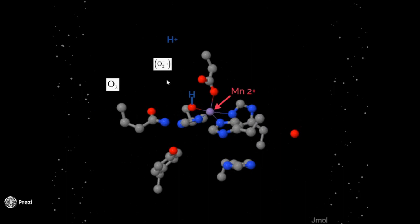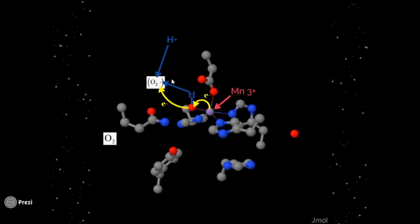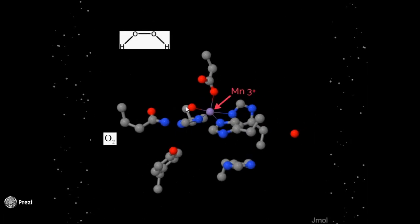Next, a second superoxide molecule enters the active site with another proton in solution. It takes an electron and hydrogen from the water ligand. The ligand then oxidizes manganese back to 3 plus and it becomes hydroxide once again. Thus, the overall reaction is this.